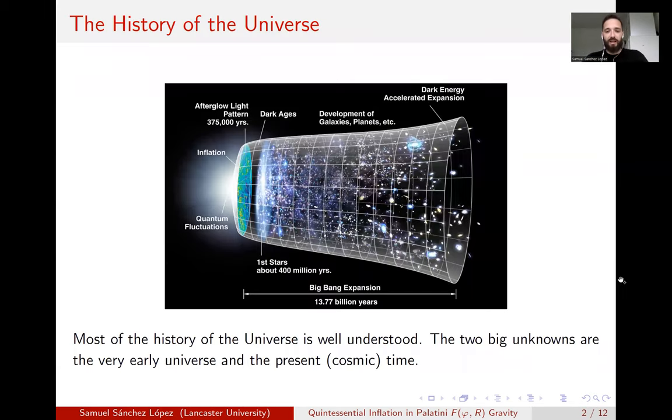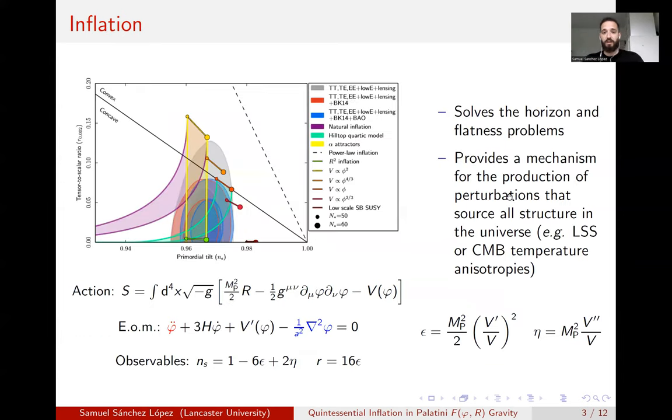So very quickly, most of the history of the universe is fairly well understood, at least in general terms, except for two periods of time, the very early universe and the present time. At the very early universe, we don't really know how the universe came into existence. And at the present time, there's a new mysterious substance called dark energy that is making the universe accelerate again. So let's look into the early universe first. And more specifically, let's look into inflation.